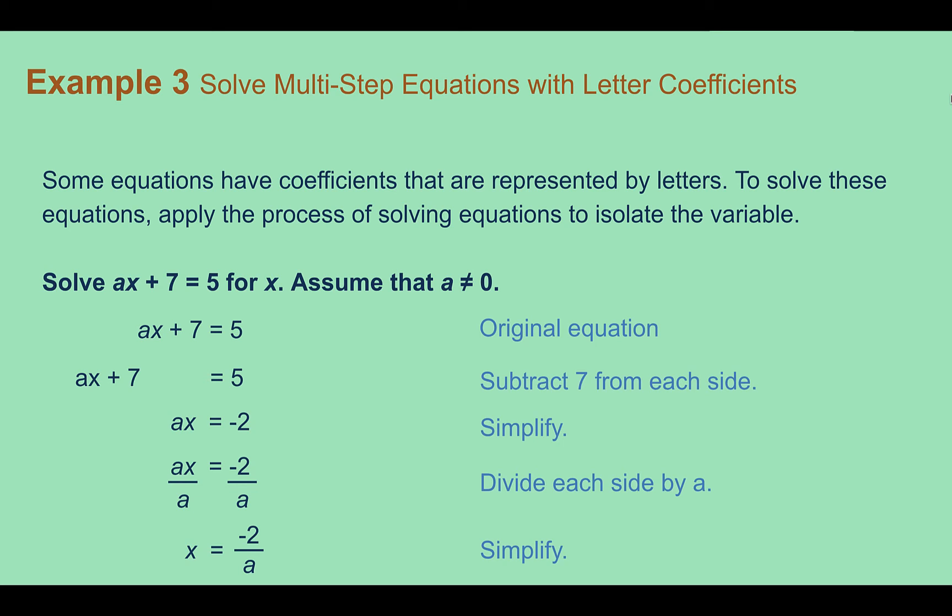So if we wanted to solve ax plus 7 equals 5 for x, so here, notice it tells us what letter to solve for. That's what we need to end up with by itself. So we're solving here for x. A, we're just going to pretend as if we know what the number is, but we can't actually calculate anything else. And in this, they're telling us assume that a is not equal to 0. If it was equal to 0, then it wouldn't be there. So we have to assume that it's not 0. So I have something x plus 7 equals 5.